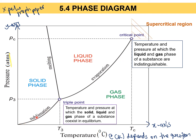This line separates the solid and gas phases. This line separates the solid and liquid phases. And this line shows the boundary between the liquid and gas phases. Inside a phase diagram, you also need to know about the triple point, critical point, and supercritical region.